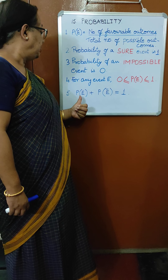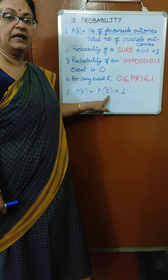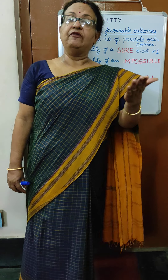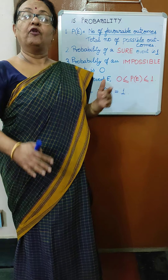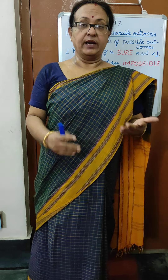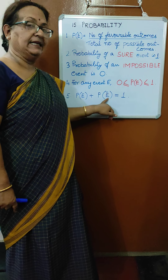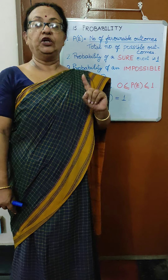The probability of any event E plus the probability of E-bar (not E) equals 1. For example, when tossing a coin, the probability of getting a head is 1 by 2, and the probability of getting a tail is also 1 by 2. Adding both gives 1. So probability of getting a head plus probability of not getting a head equals 1. This will be more clear when you do the sums.